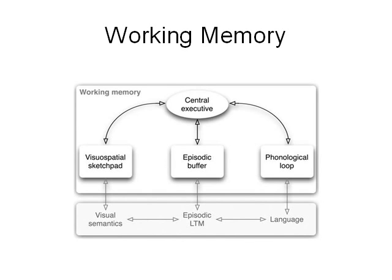Let me just recap. You have the central executive in charge of your working memory. It governs a couple of slave systems. On the left you have the visuospatial sketchpad that handles visual memory. On the right, the phonological loop that handles acoustic memory. And Baddeley in 2000 introduced a third slave system, the episodic buffer, which blends visual and acoustic information together to produce episodes of memory, which can then be stored in long-term memory.